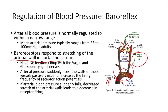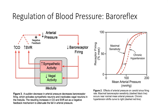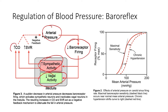If arterial blood pressure suddenly drops — like in a hemorrhage or maybe going from sitting to standing — we see decreased stretch in the arterial walls, which leads to a decrease in receptor firing. So this is the reflex loop in a nutshell. If we have a decrease in arterial pressure, either in the carotid or in the aorta, there's lower stretch on the baroreceptors and a lower firing frequency. What that does ultimately is increase sympathetic activity and decrease vagal activity, leading to higher cardiac output and increased vascular resistance, which raises blood pressure — a negative feedback loop.